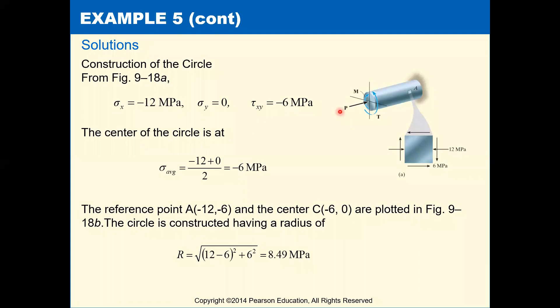In this problem we have a normal axial force causing an axial normal stress of negative 12 megapascals and a torque causing torsional shear stress of negative 6 megapascals giving us this element.